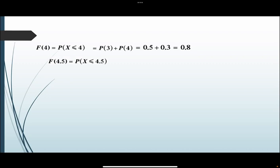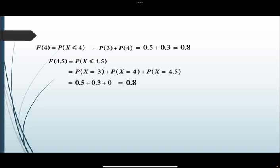F(4.5): وهي عبارة عن P(X ≤ 4.5)، يعني P(X = 3) زائد P(X = 4) زائد P(X = 4.5)، وهي 0.5 زائد 0.3 زائد 0، الناتج يساوي 0.8.